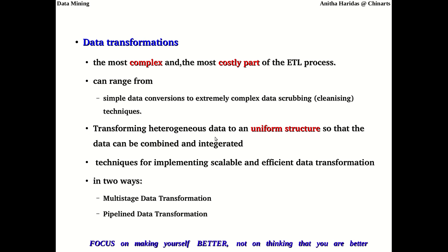The second back-end process is the transformation process, which is the most complex and most costly. This process can range from simple data conversion to extremely complex data scrubbing — also called data cleansing. Transformation is generally done for heterogeneous data because we want a uniform, consistent format for all data collected from different sources.